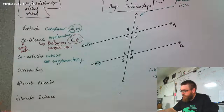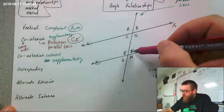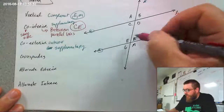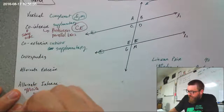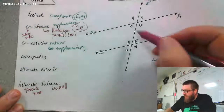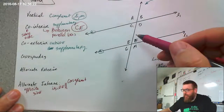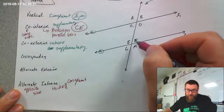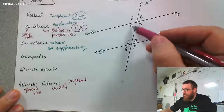Now, C and F are what are called alternate interior angles. Alternate interior means they are on opposite sides of the transversal but inside the parallel lines. Alternate interior angles are congruent to each other — C and F are the same measurement. Here's the thing: E and F add up to 180 and make a straight line. And it turns out E and C also add up to 180 because C and F are equal to each other.